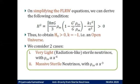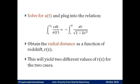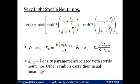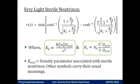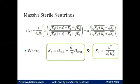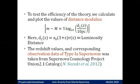Two cases are considered here: the first of very light sterile neutrinos and second massive sterile neutrinos. Correspondingly, we solve for A(T) using the FLRW equations for both these cases and plug it into the given relation that gives us the radial distance R as a function of the redshift Z for the two cases. The two expressions are given here. K0, K1 and in the next case K2, K3 are some constants used to simplify these expressions. We can thus calculate the distance modulus m-M.